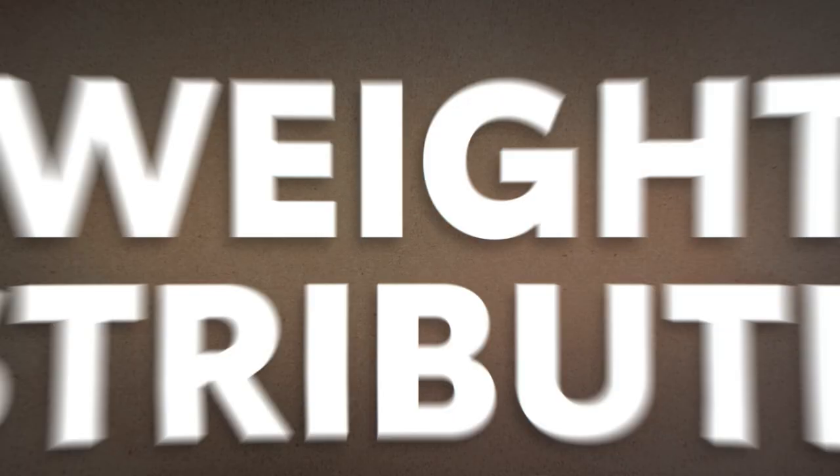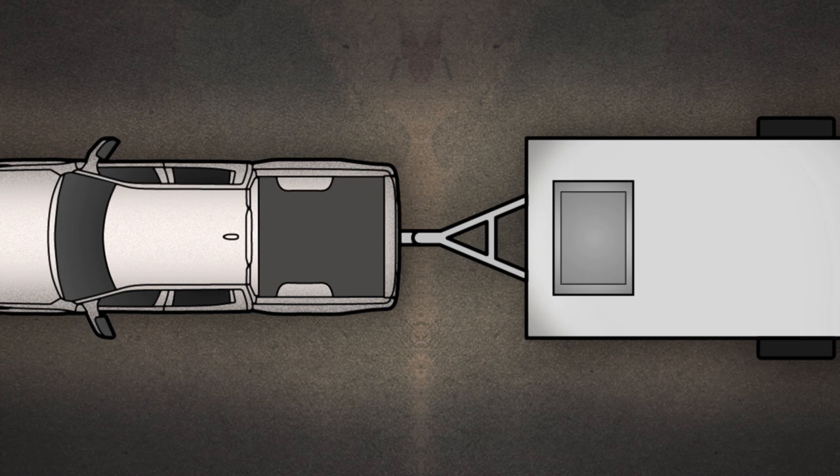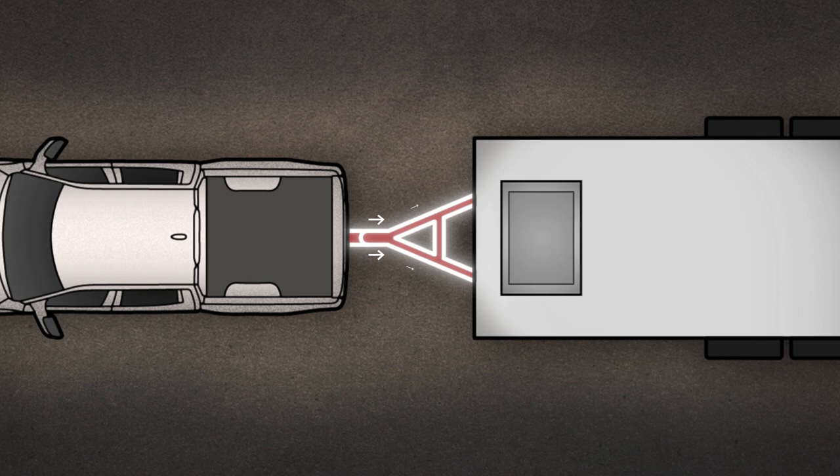A weight distribution hitch can be a driver's best friend when towing heavier loads. That's because it helps distribute weight more evenly between the vehicle that's towing and the trailer axle, which helps improve stability and handling while towing. Toyota recommends using a weight distribution hitch for trailers over 5,000 pounds.